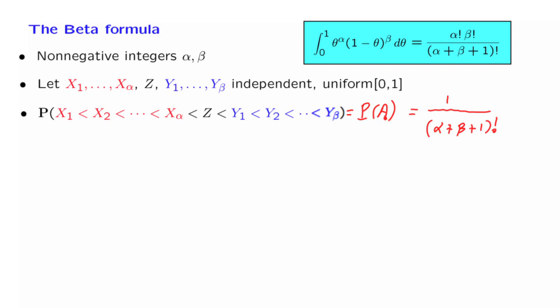So this is one expression for the probability of this event A. Now we're going to calculate this probability in a different way. What we will do is apply the total probability theorem. We're going to condition on Z. We're going to calculate the conditional probability of A, given that Z takes a specific value, and then weigh those probabilities according to the probability density of the random variable Z. This is just the total probability theorem applied to this particular context.